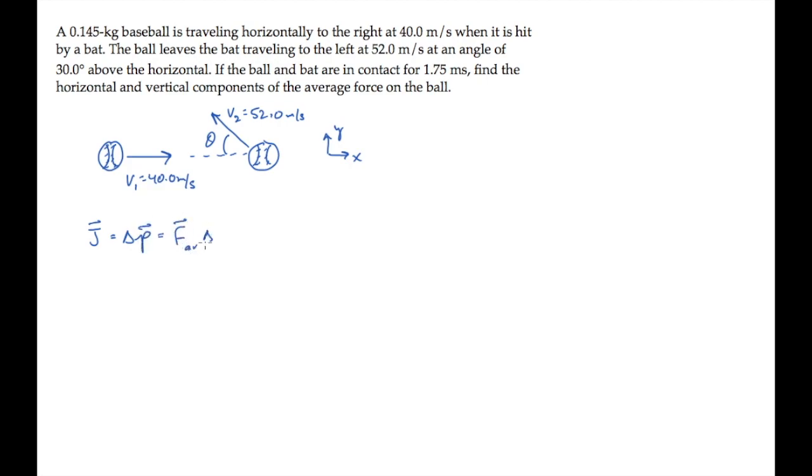The impulse, capital J, is a vector equal to the change in momentum, which is also equal to the average force multiplied by the time duration delta t that the ball is in contact with the bat. This is a vector equation, so we can write the components x and y.